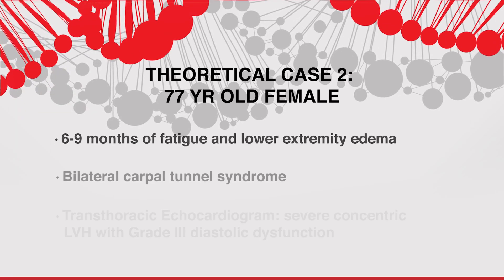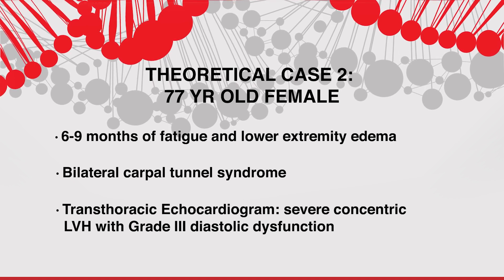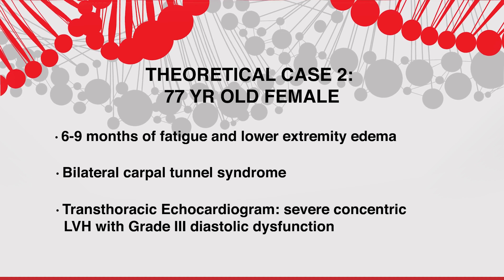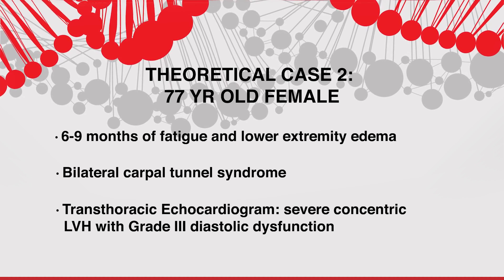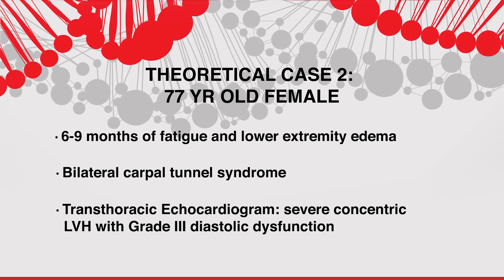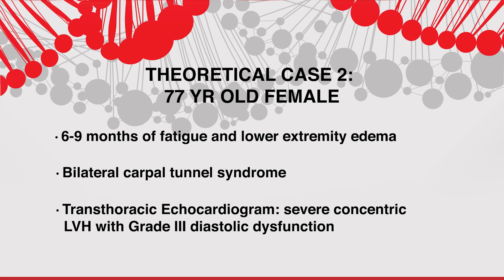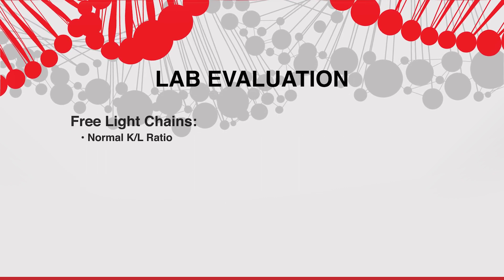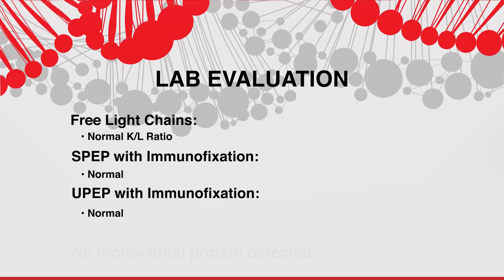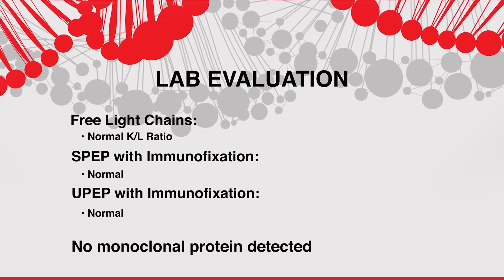Our next patient is a 77-year-old woman who comes to cardiology clinic with six to nine months of progressive fatigue and lower extremity swelling. Her history is notable for bilateral carpal tunnel syndrome, which was treated about 10 years earlier. The bilateral carpal tunnel syndrome, in the setting of heart failure symptoms, raised suspicion for cardiac amyloidosis. The patient was referred for similar serology — free light chains, serum and urine protein electrophoresis with immunofixation — which also returned within normal limits.